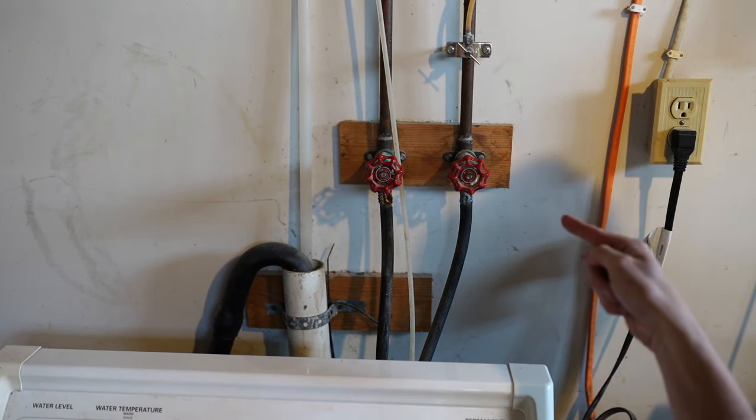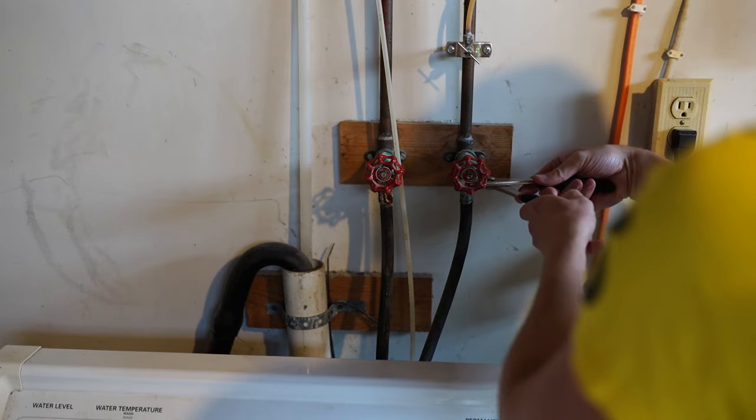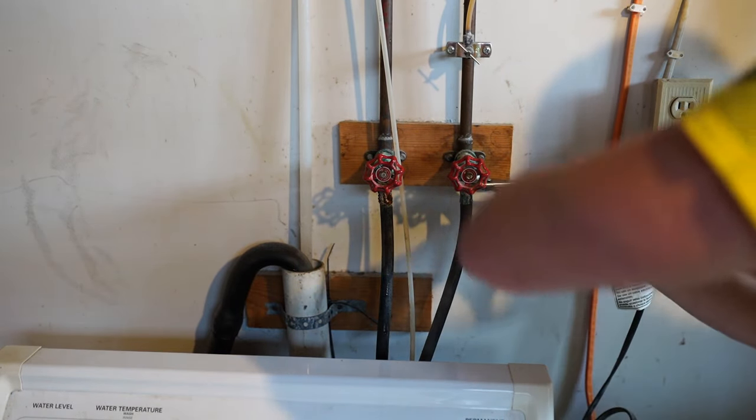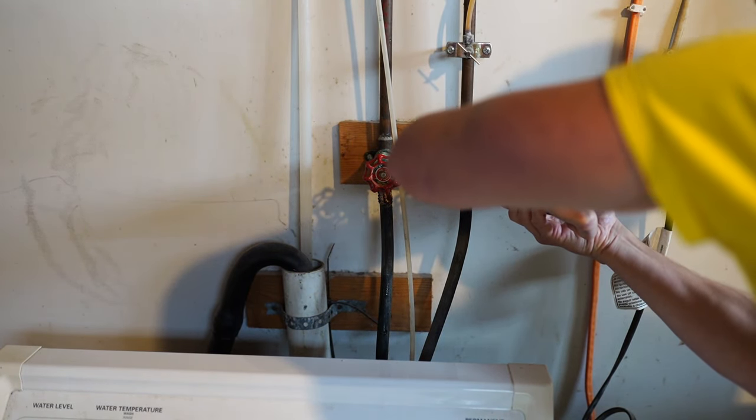When removing the old hoses you'll notice that one end of the connector has ridges. We'll use a slip joint pliers to grip on those ridges.